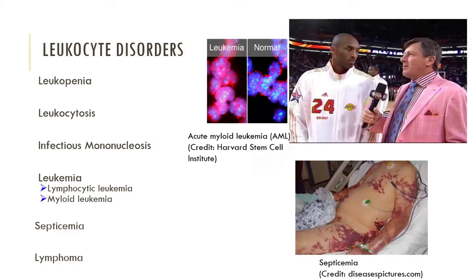Leukocyte disorders include leukopenia, which is an abnormally low white blood cell count, commonly induced by drugs such as glucocorticoids and anti-cancer agents. Leukocytosis is an increase in white blood cell count indicating infection. Infectious mononucleosis, also called the kissing disease, is caused by the Epstein-Barr virus and results in an excessive number of atypical agranulocytes.